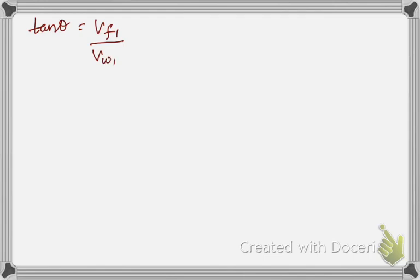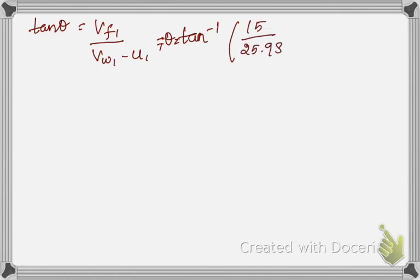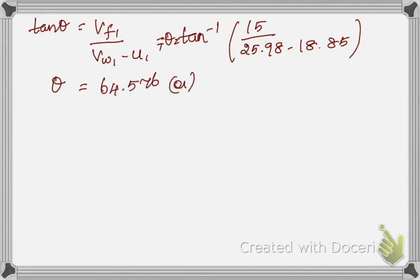Now we can calculate theta: theta = tan⁻¹(vf1 / (vw1 − u1)) = tan⁻¹(15 / (25.98 − 18.85)) = tan⁻¹(15 / 7.13). This gives theta = 64.576°, or 64 degrees 34 minutes. The vane angle at inlet has been determined.